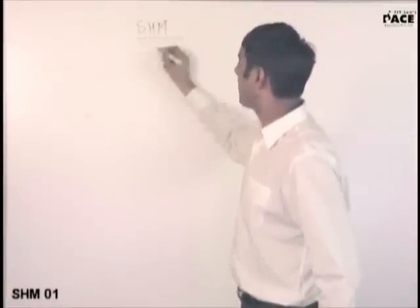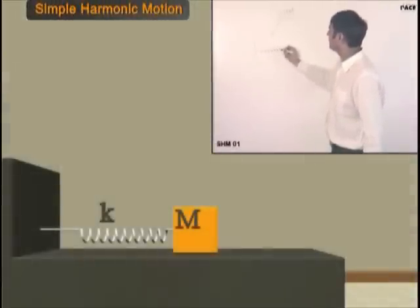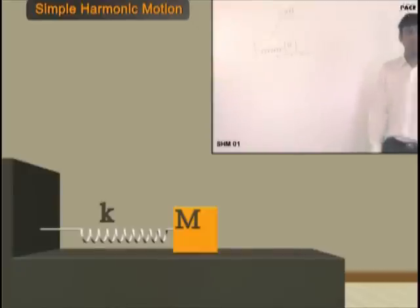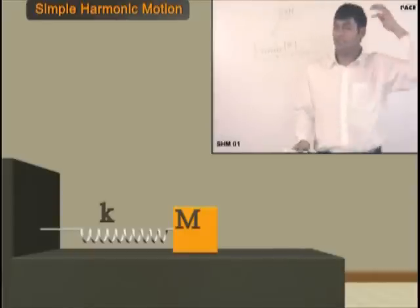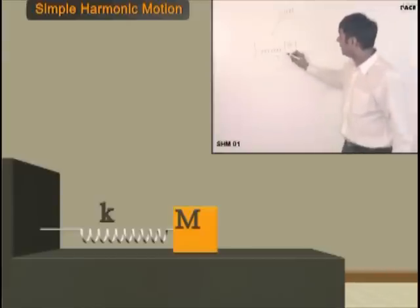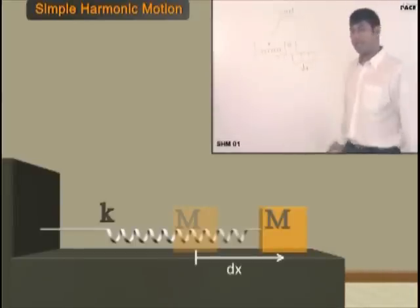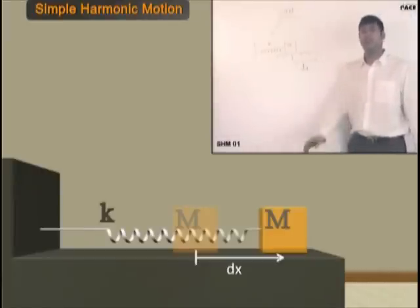Now we come to the exact problem. In SHM, there are two divisions. You will be given a physical problem — suppose a spring of spring constant k with a mass in equilibrium. If displaced from equilibrium, what kind of motion will it undergo? Is it SHM? If so, find the time period. There are four steps to follow. First step: check whether this is SHM or not. Give it an imaginary small displacement dx towards the right. We give small displacements about the equilibrium position and check whether it is SHM — it is not that you can give any large displacement and expect SHM.